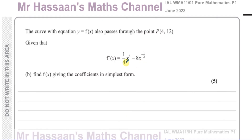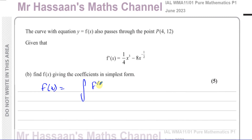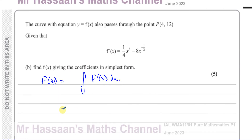We haven't been given the curve y equals f(x) directly — we've been given the gradient function y equals f'(x). So to find the original function, we have to integrate. f(x) equals the integral of f'(x) with respect to x, which means integrating a quarter x cubed minus 8x to the power of negative one half with respect to x.